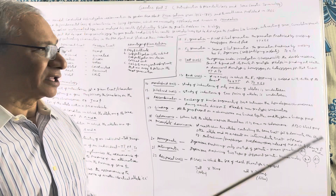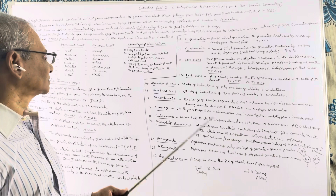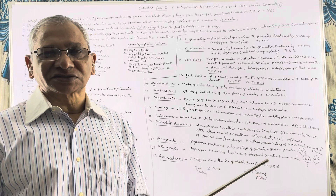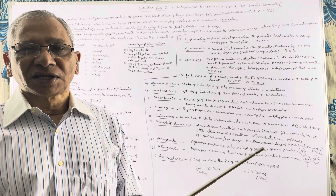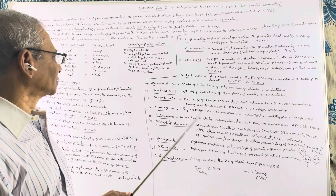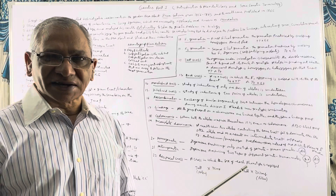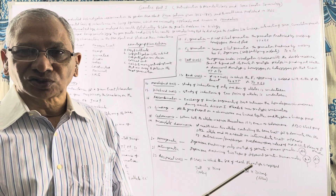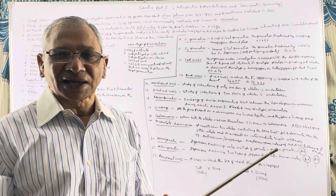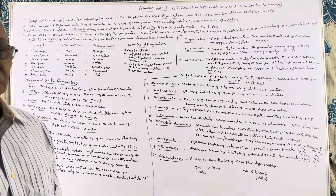Mendel selected the garden pea because it is very easy to cultivate. In this plant, self-fertilization occurs naturally, but cross-fertilization can also be carried out without any problem. The contrasting traits exhibited by the plant are easy to follow from generation to generation. So the plant has many advantages. Let us now see the seven pairs of traits selected by Mendel for his hybridization experiments.